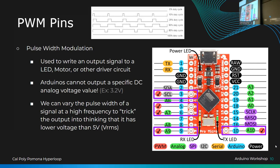V_RMS is essentially the average — root mean squared. There's a more complex equation, but links are in the PowerPoint for you to explore. Bottom line: PWM works for LEDs to lower brightness, and for motors to lower speed by reducing effective voltage. Any output where you want to regulate speed, brightness, or another quantitative quality, PWM is very useful.